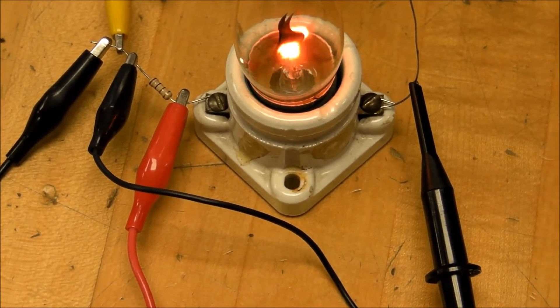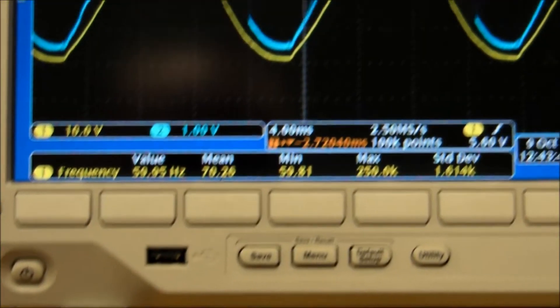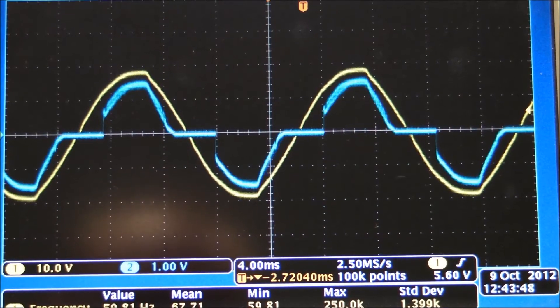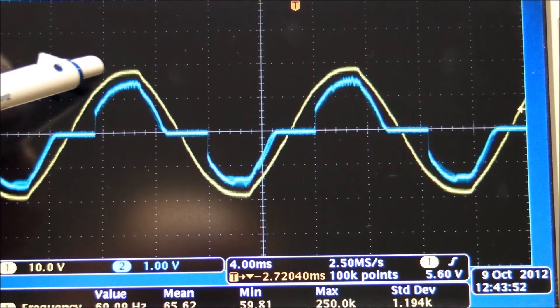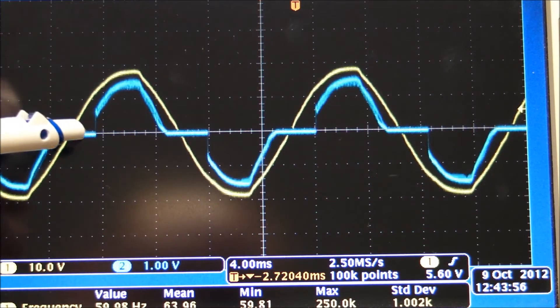Channel 2 is reading across the resistor. Channel 1, the yellow one, is looking at the input 120 volt AC, which actually goes up to about 170 volts peak value.